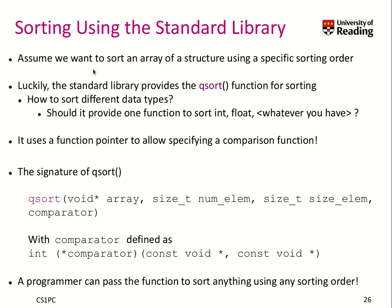Sorting using the standard library is possible. Assume you want to sort an array or a structure using a specific sorting order. In our standard library, we have the qsort function for sorting. A key question that arises is how can we sort different data types? It would be possible by providing a sort function for integer, a sort function for float, a sort function for whatever, but that would be very tedious. The good thing is that we learned about function pointers, and now it's time to put this knowledge to good use.